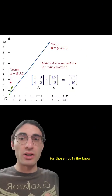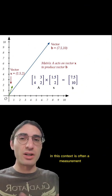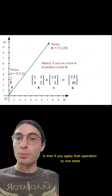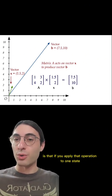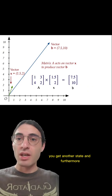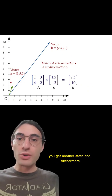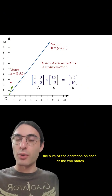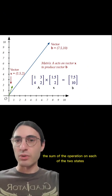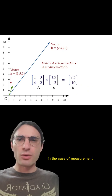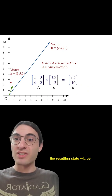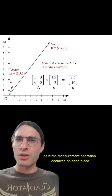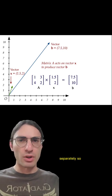For those not in the know, a linear operation in this context is often a measurement. What it means to be a linear operation is that if you apply that operation to one state, you get another state. Furthermore, you could equally well apply it to a sum of two states, and your result will be the sum of the operation on each of the two states. In the case of a measurement, the resulting state will be the sum of the original states, weighted by their measurement values, as if the measurement operation occurred on each piece separately.